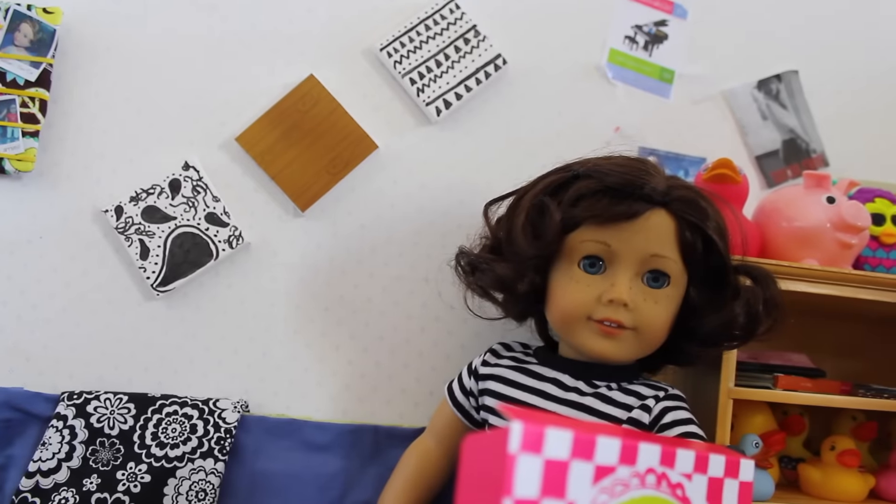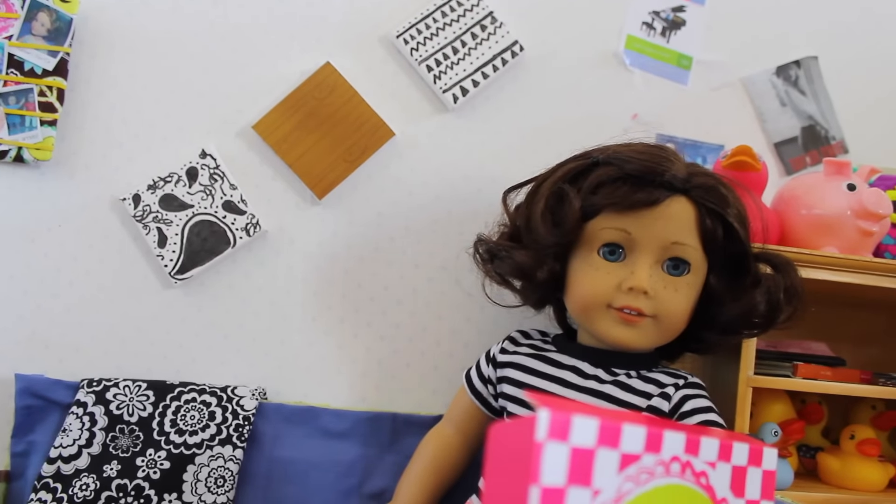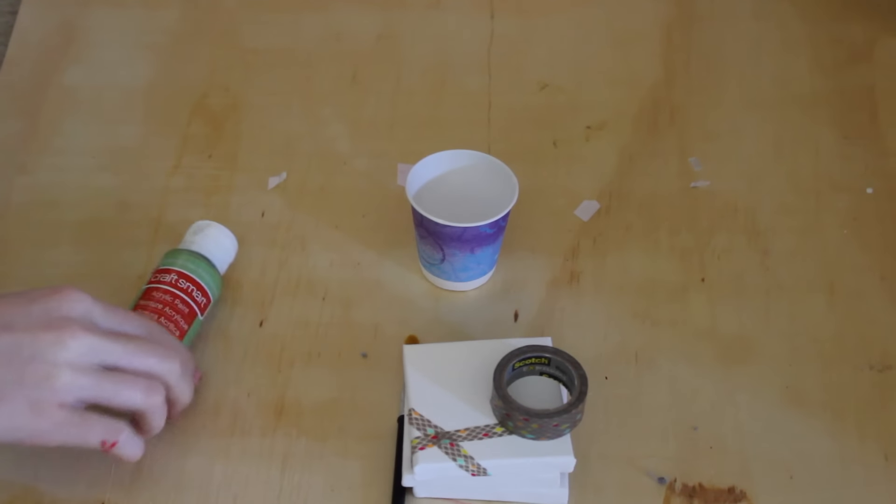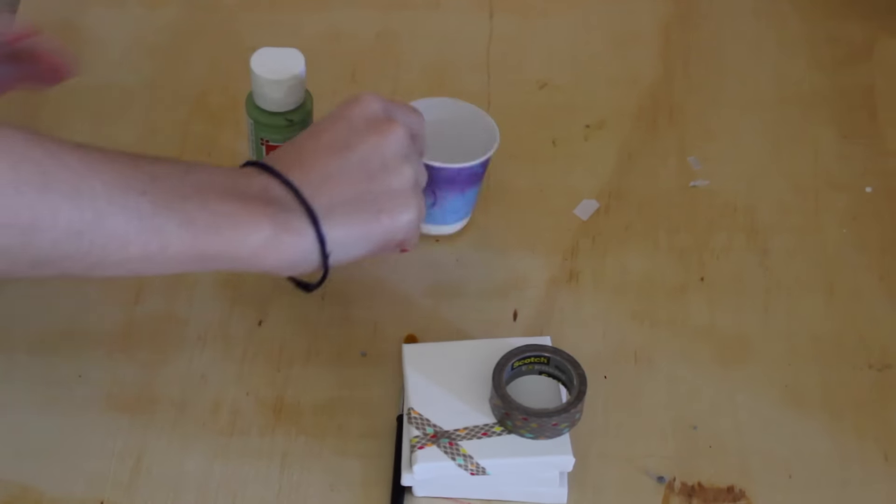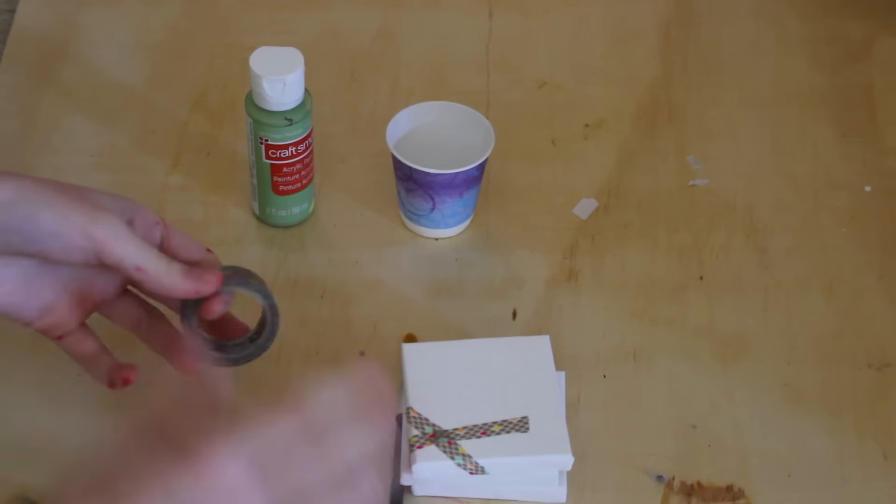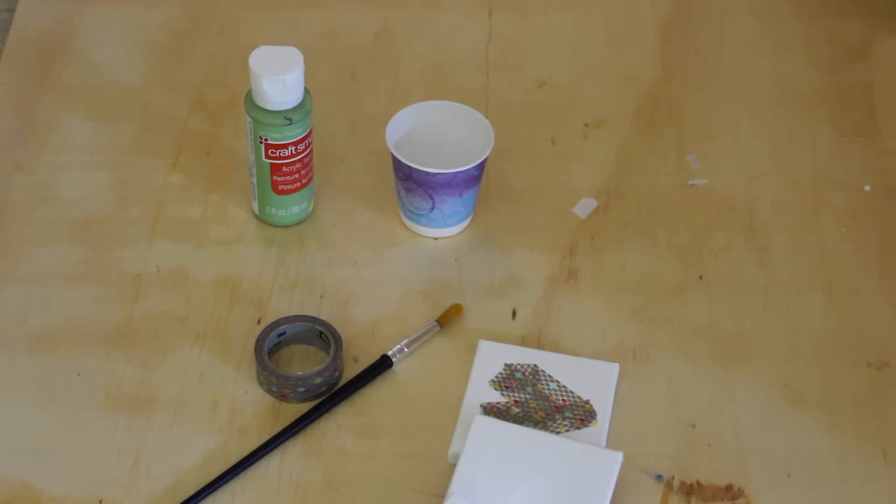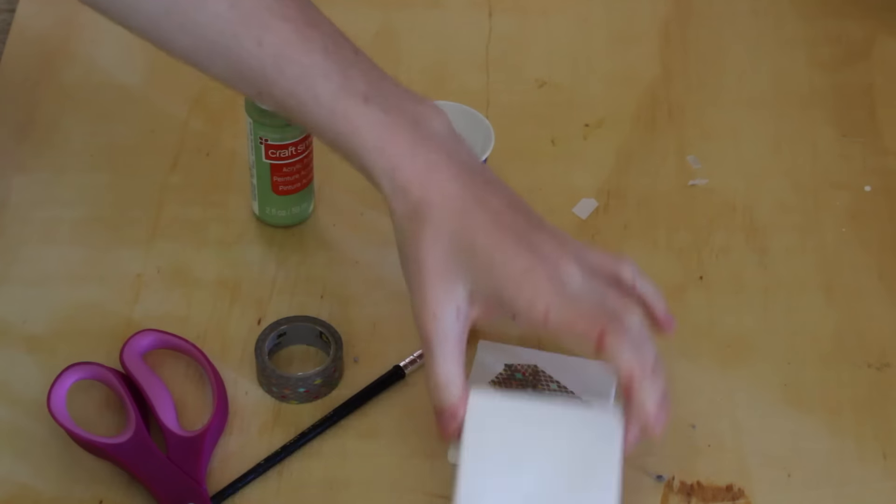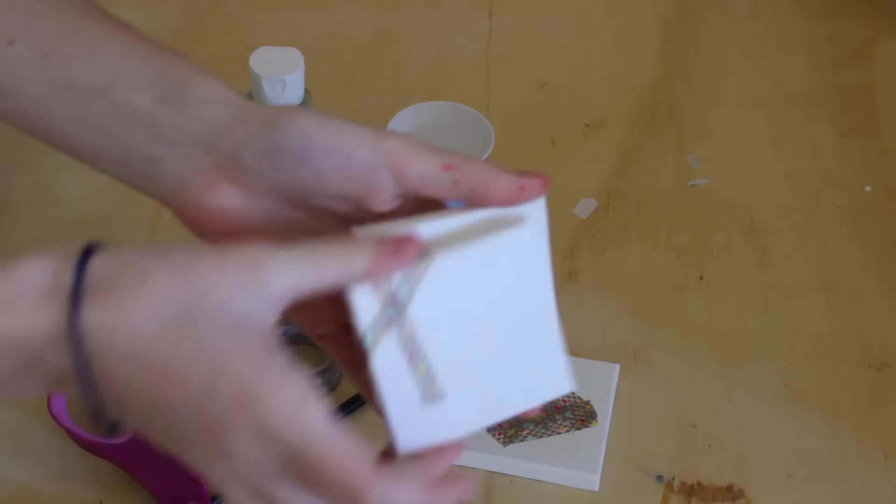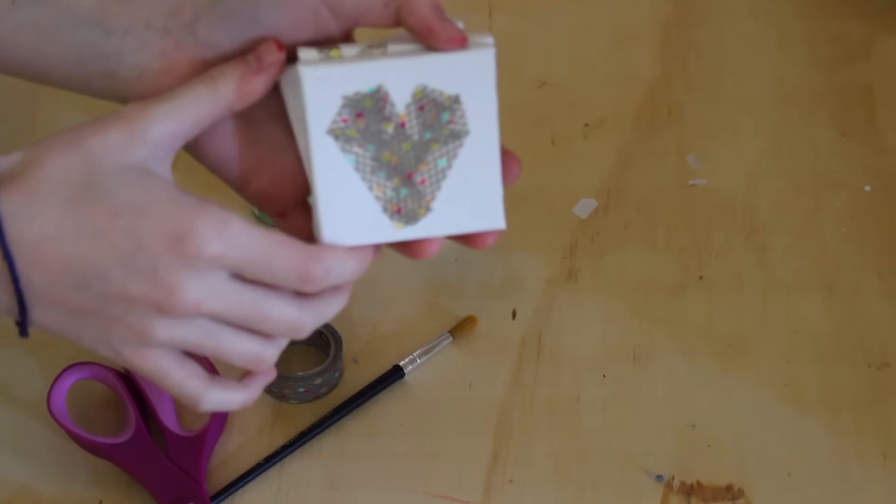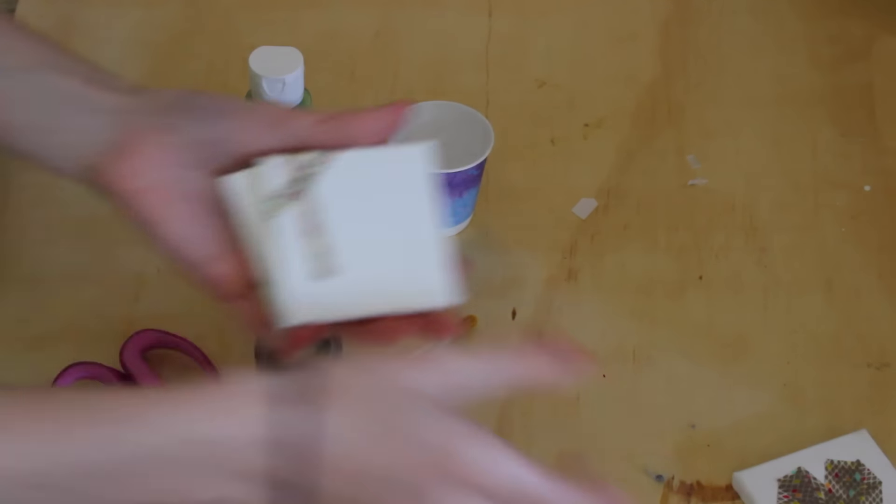For the first one you're going to need some paint, some kind of bowl or something to put the paint in, some tape - I'm using washi tape - a paintbrush, and some little doll-size canvases. I got these at Hobby Lobby, and then you'll also need some scissors. The canvases are from Hobby Lobby and I got six of them for four dollars. They're in the canvas section, not in the dollar section or anything.